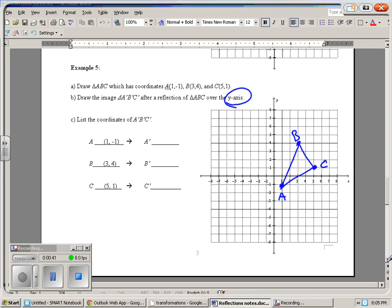And then we are going to reflect it over the y-axis, so go ahead and highlight the y-axis. A is 1 to the right of the y-axis, so A prime is 1 to the left. C is 5 to the right, so C prime is 1, 2, 3, 4, 5 to the left.